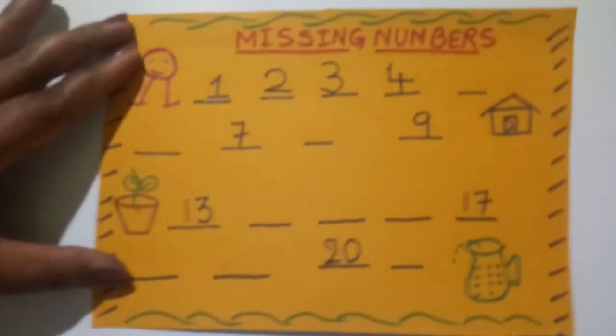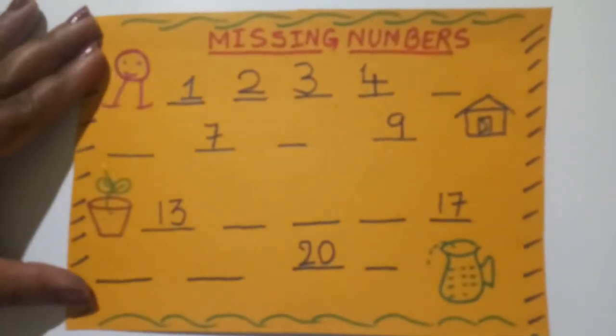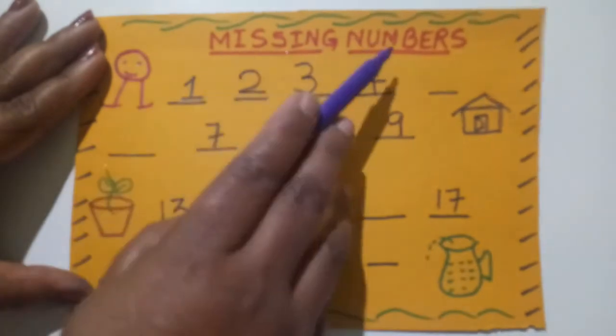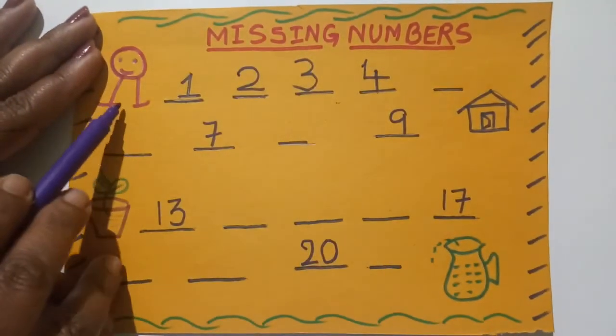But today, we will not try to know that. Because you all know about it. Today, something else we will learn. That is missing numbers. Missing numbers? Because, yes, it is like this. Missing numbers. This is a small kid here.